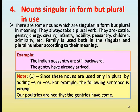Nouns singular in form but plural in use. Some nouns are singular in form but plural in meaning and always take a plural verb. Examples: cattle, gentry, clergy, cavalry, infantry, nobility, peasantry, children, admiralty. Examples: The Indian peasantry are still backward. The gentry have already arrived. Note: since these nouns are always plural, adding S or ES is wrong. For example, 'our paltries are healthy' is incorrect.